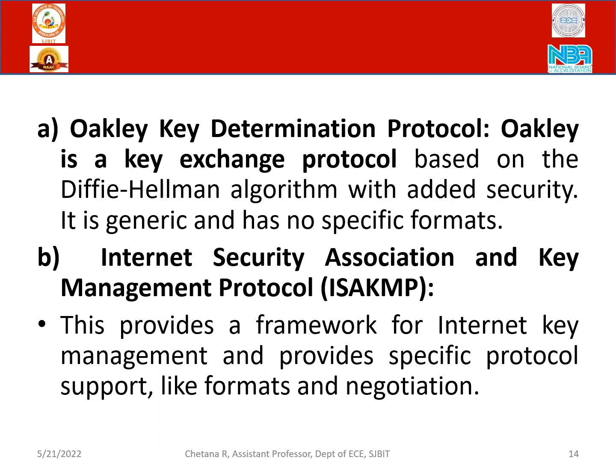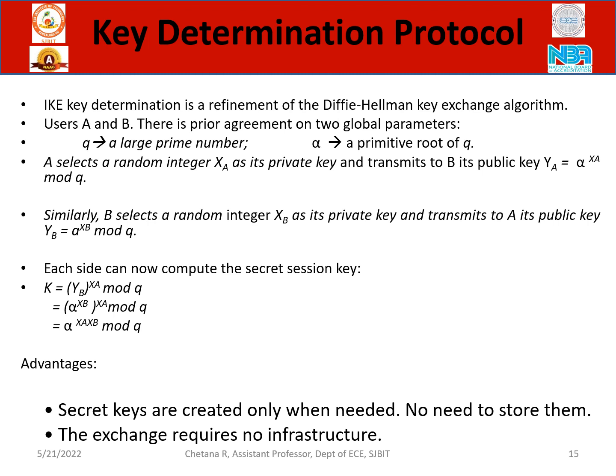The OAKLEY determination protocol is based on the Diffie-Hellman algorithm, because Diffie-Hellman is the algorithm meant for key exchange. In association with that, it works with the Internet Security Association and Key Management Protocol (ISAKMP), which helps in doing negotiations for key exchange. Two users are defined: Q is a large prime number, alpha is the primitive root, XA is the private key, and YA is the public key — substituted with the appropriate formulas to compute a shared secret key.